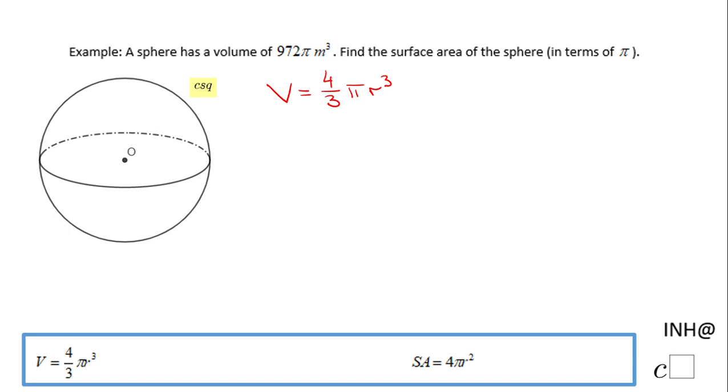I'm going to replace the volume with 972π that is given to us, and I need to solve this equation for r cubed. The first thing I will suggest you to do is to cancel out the π. You can do that...